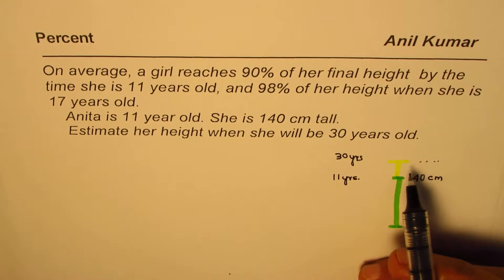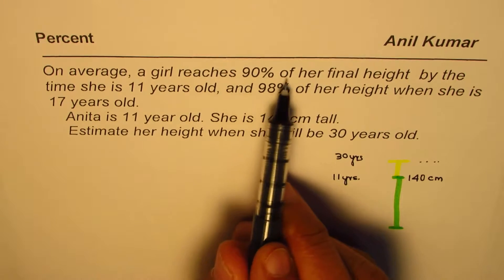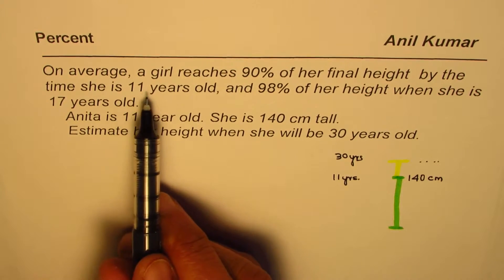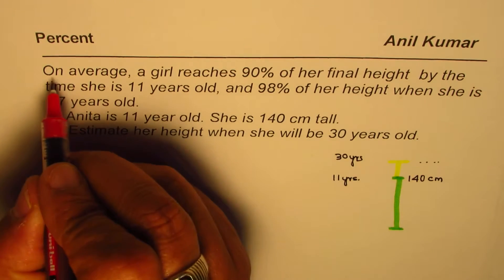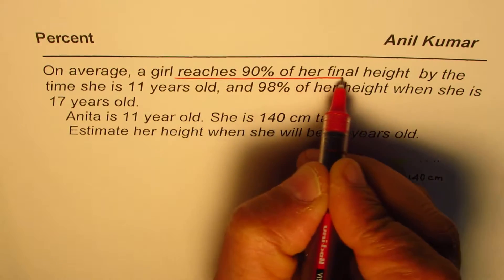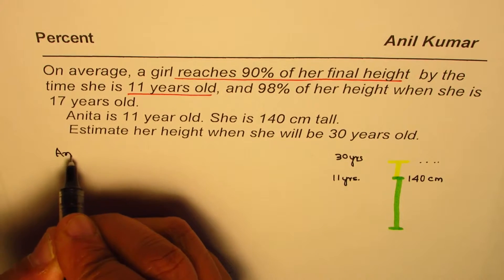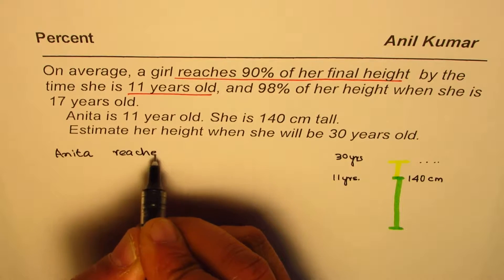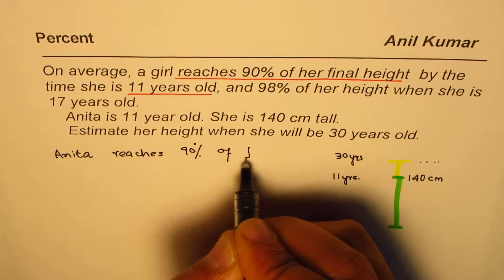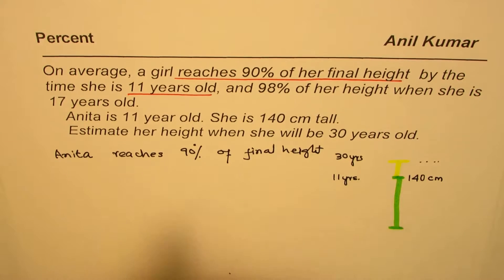What is also given to us is that on average, girls reach 90 percent of their final height by the time they are 11 years old. So that means at 11 years old she is at 90 percent of her final height. Anita reaches 90 percent of her final height when she is 11 years old.